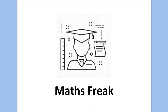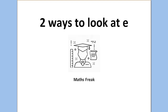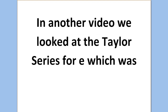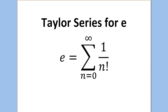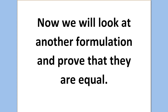Hello guys and welcome to my video today. Today we're going to look at e again in two different ways. In another video we looked at the Taylor series for e, which was e equals the sum from n equals 0 to infinity of 1 over n factorial. Now we will look at another formulation and prove that they are equal.